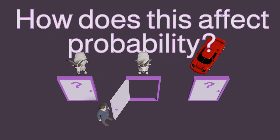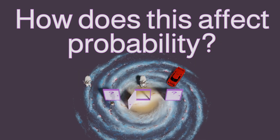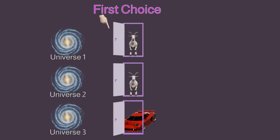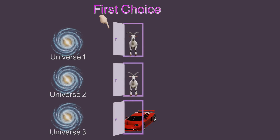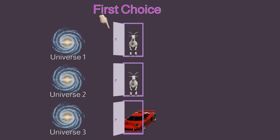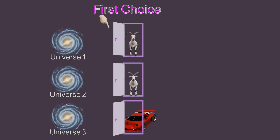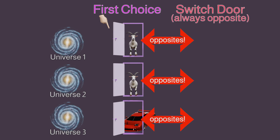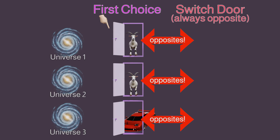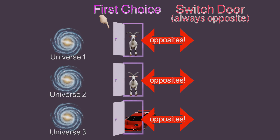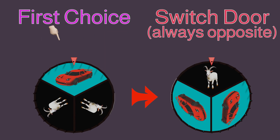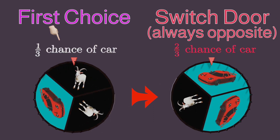So then, how does this affect probability? In two out of three universes, you will randomly choose the door hiding a goat as your first choice. That should be obvious, since there are two goats. Because we know the switch door hides a different item, in those same two universes, the door you're allowed to switch to always hides a car. Which means always switching gives you a car two thirds of the time.